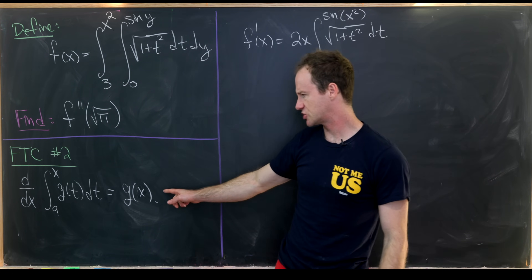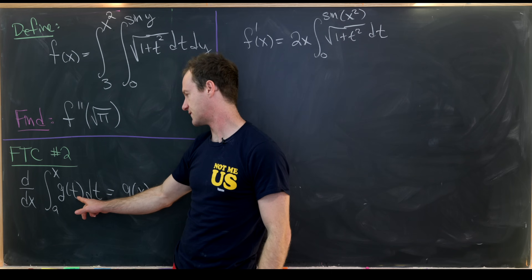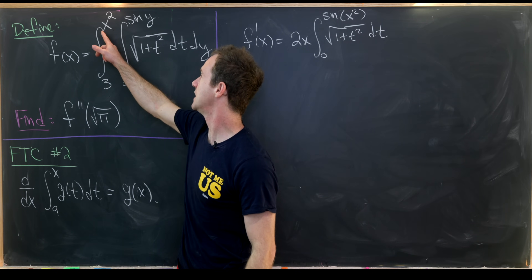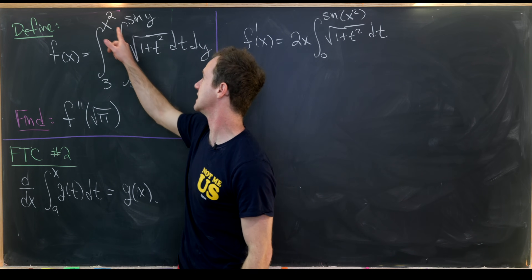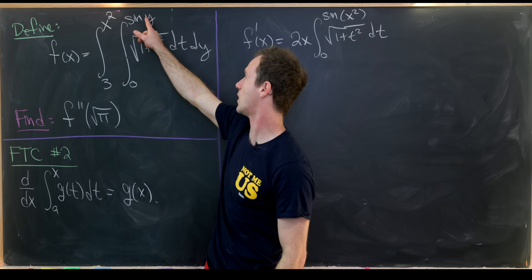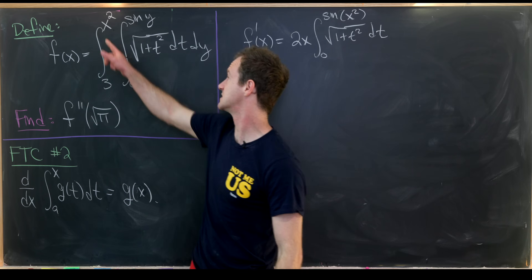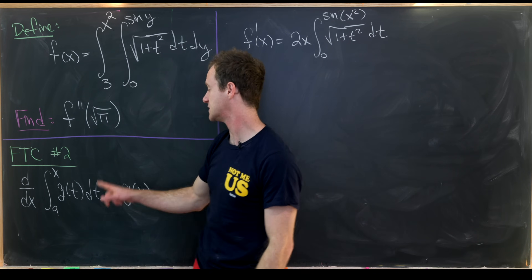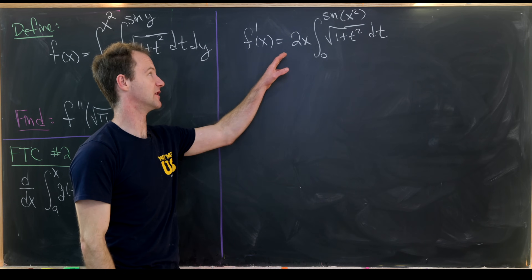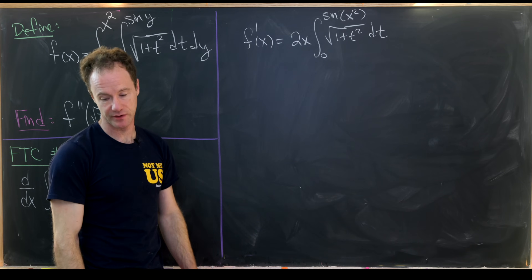Let's make sure we see what's going on. We're taking x and inserting it into the function — taking the upper bound x squared and inserting it into the inner function, which is a function of y. We want to think of this as a composition: we're composing x squared into a function, and by the chain rule we multiply by the derivative of x squared, which is 2x.